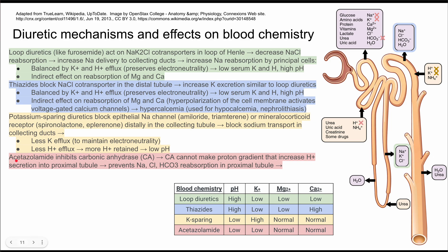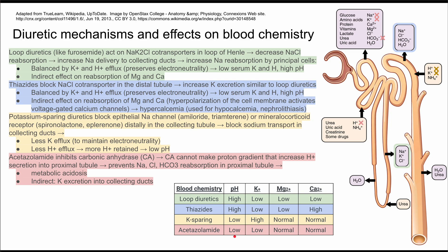Lastly, acetazolamide is an enzyme blocker that inhibits carbonic anhydrase. Carbonic anhydrase normally combines water and CO2 to make H2CO3, which dissociates into bicarbonate and hydrogen ions, and also performs the reverse reaction. Without carbonic anhydrase, you can't make this proton gradient, so you're unable to secrete hydrogen ions into the proximal tubule. This prevents reabsorption of sodium chloride and bicarbonate. With more hydrogen ions remaining in the body, you get a metabolic acidosis and a low pH.